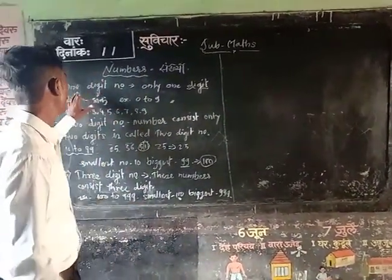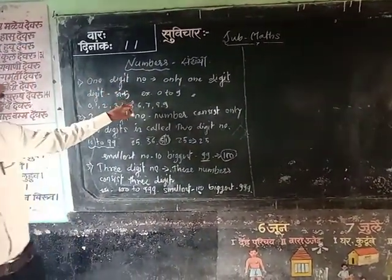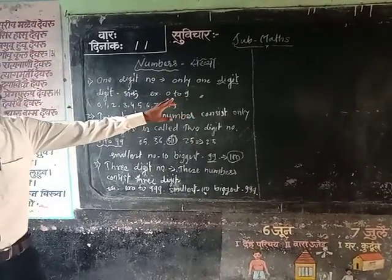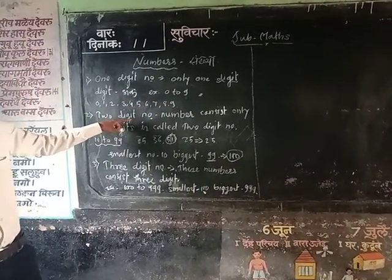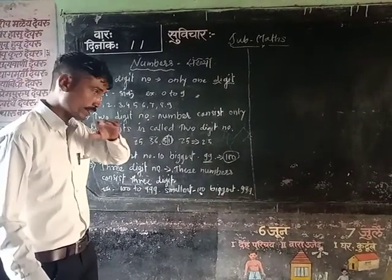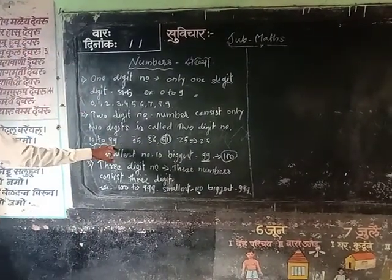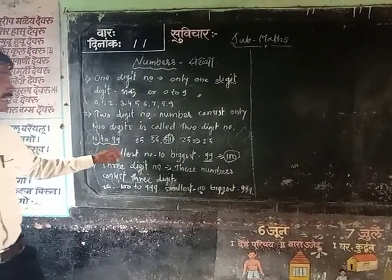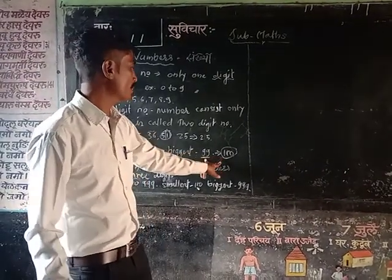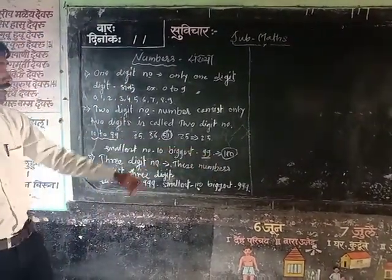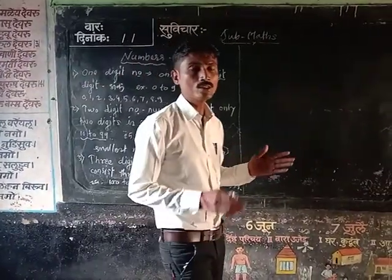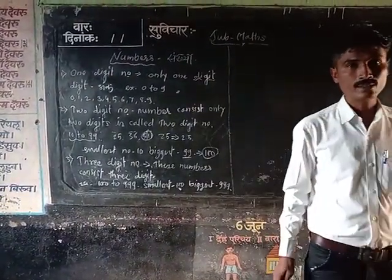In 1-digit numbers, the biggest number is 9. And in the section of 2-digit numbers, the biggest number is 99. What is the difference between 99 and 100? In 99, we see that it consists of only 2 digits: 9 and 9.